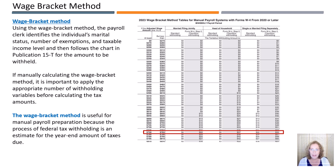Let's now talk about the wage bracket method for calculating federal income taxes. The first step for calculating the taxes is to identify the individual's marital status, number of exemptions, and taxable income level, and then follow the chart in Publication 15T, or in your textbook, for the amount to be withheld. If calculating the wage bracket method, it is important to apply the appropriate number of withholding variables before calculating the tax amounts. The wage bracket method is useful for manual payroll preparation because the process of federal tax withholding is an estimate for the year-end amount of taxes due.